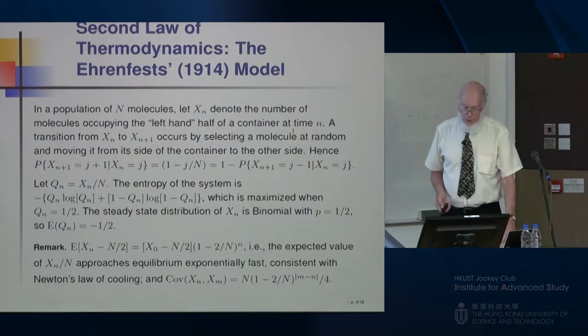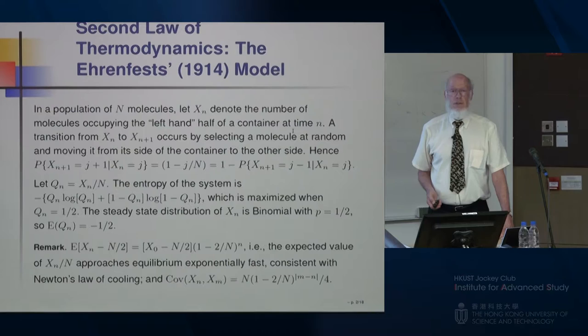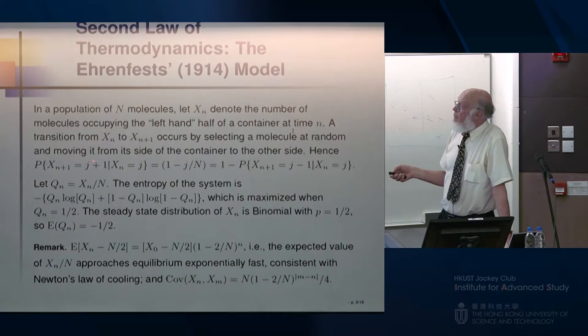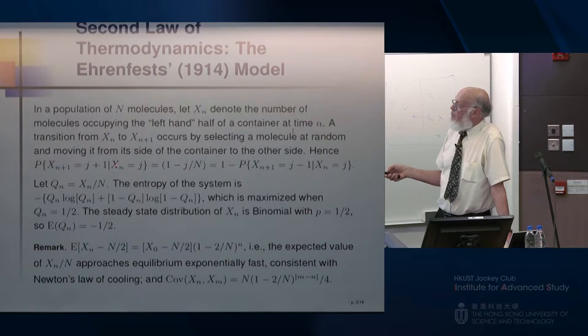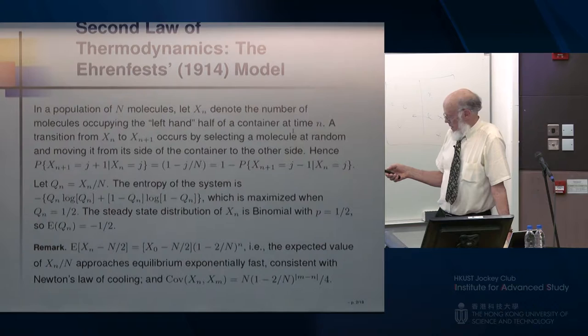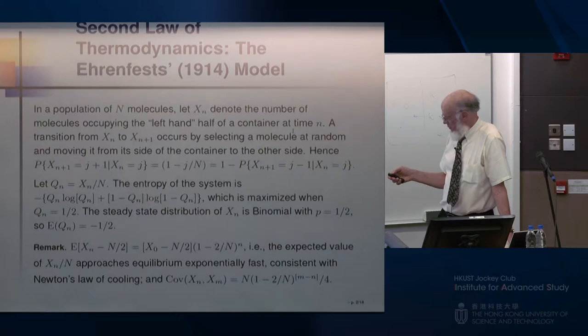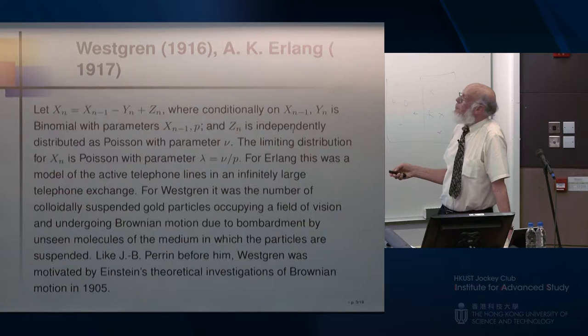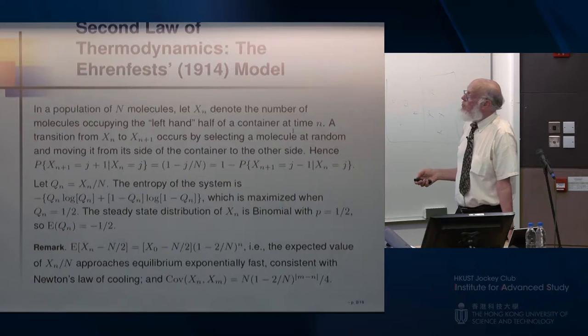That would seem to contradict the second law of thermodynamics, because it would represent a decrease in the entropy of a closed system. Here's the formal model: Xn, the number of molecules on the left-hand side of the partition, will increase with probability proportional to the molecules on the other side. If the number of molecules on the left-hand side is very large, it's very unlikely to increase and likely to decrease — giving us this movement towards equilibrium.